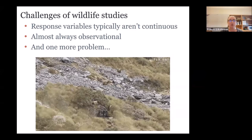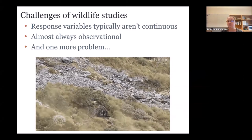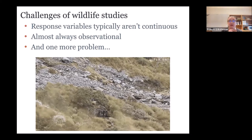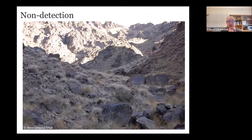There is one more problem: it turns out animals are really hard to count. A lot of us joke that we all have degrees in counting animals — it seems silly, like you should just be able to go out and count them. But we have one really important issue that almost all wildlife statistics models have focused on dealing with, and that issue is non-detection. In this image, there is a snow leopard — and if I didn't know where it was, I would have a really difficult time finding it.